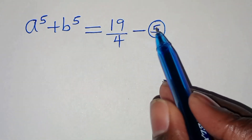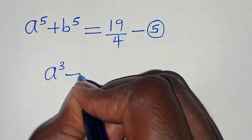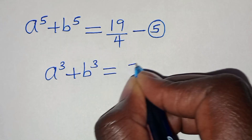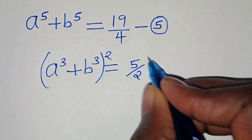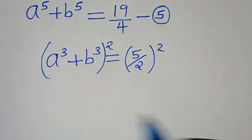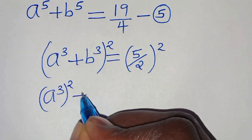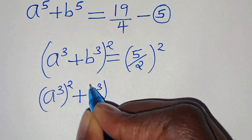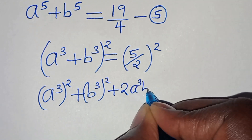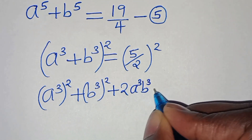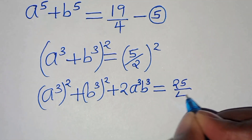From equation four, which is a cubed plus b cubed equals five over two, let's square both sides. So we have a cubed plus b cubed, the whole thing squared, which expands as a cubed squared plus b cubed squared plus two times a cubed times b cubed, equals five over two squared which is twenty-five over four.